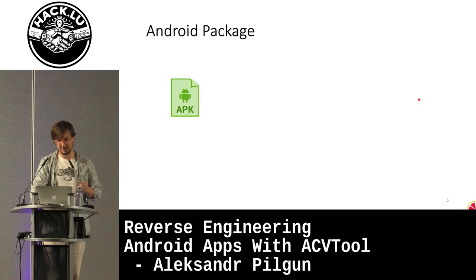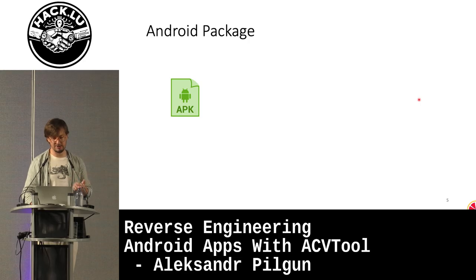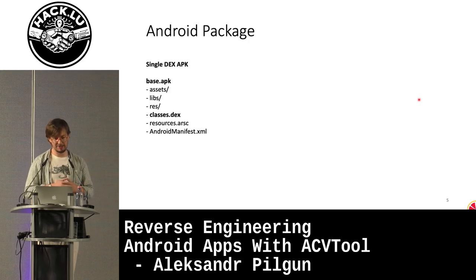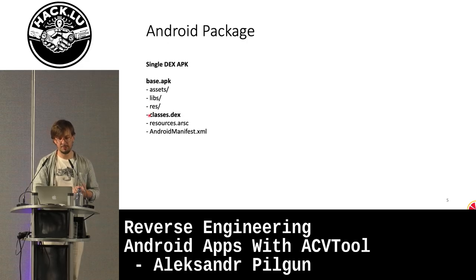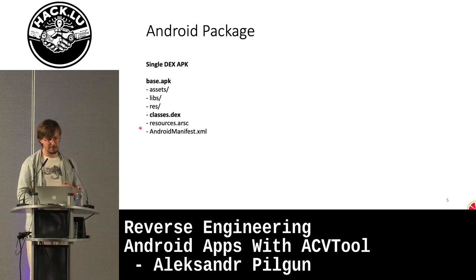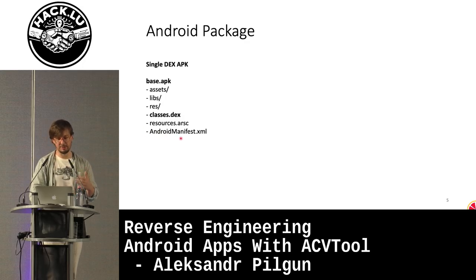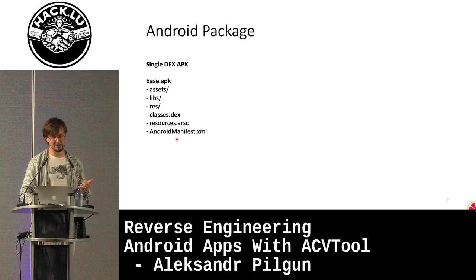The Android package is a file usually with the extension APK that gets installed on Android. Inside this APK — usually on the phone it's named like a base APK — you will find assets, libraries, resources, and also the binary file called classes.dex. This is a binary executable which is unpacked into instructions and executed by the Android system. The Android manifest describes this package — for example, it can specify permissions, entry points like a main activity, and so on.